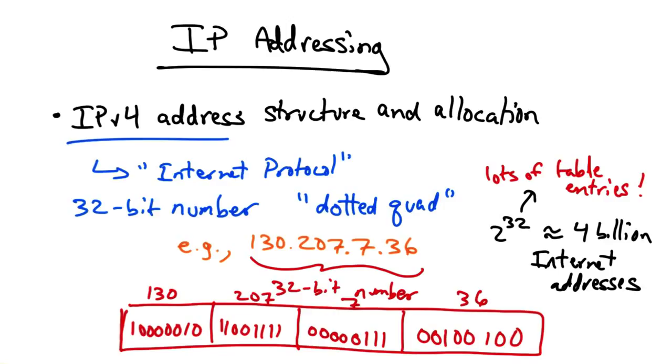where lookups can be slow, and the memory required to store such a large table might be expensive. So what we need is a more concise way of representing groups of IP addresses.